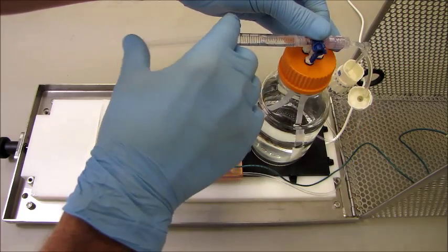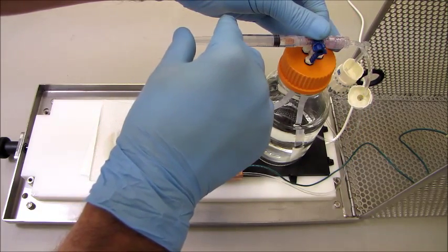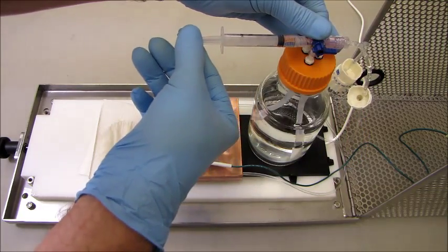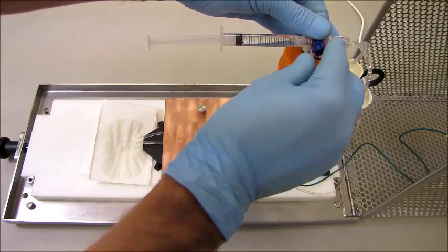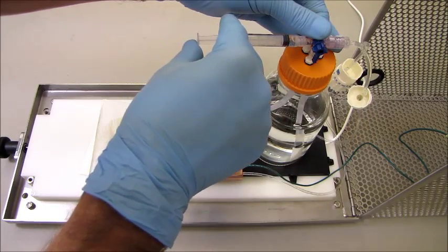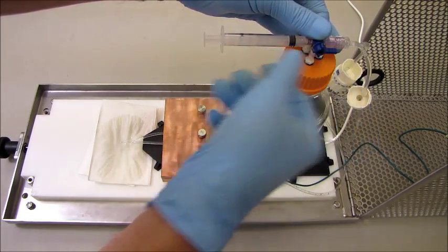The goal here is to remove air from the flow control assembly. With the stopcock ported towards the flow control assembly, we draw solution from the flask into the syringe. Then rotate the stopcock towards the flask and push the solution through the flow control assembly.